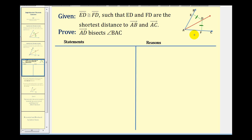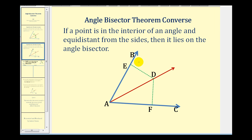Let's look at a larger diagram and talk about strategy. Since the lengths of ED and FD are the shortest distances to the two blue rays, these segments must be perpendicular to those rays. This is important because it gives us two small right triangles, one on each side.